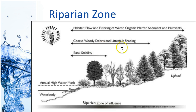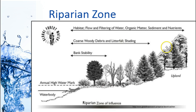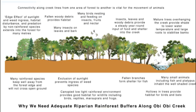Each species in the riparian zone does something for the river. Soil moisture decreases as you get further from the river, changing the type of species, but all are needed to keep the river healthy. The ones very close to the river provide stability for the banks so it doesn't erode. The ones further away provide food sources — the debris and leaf litter that go into the stream — and they shade the stream, helping keep the temperature regulated.